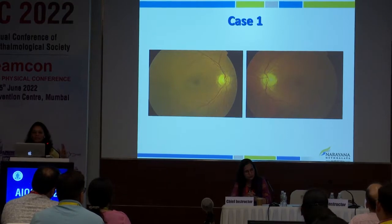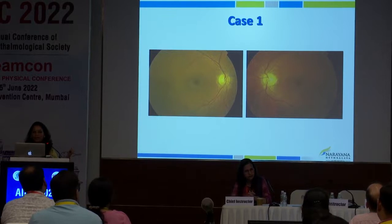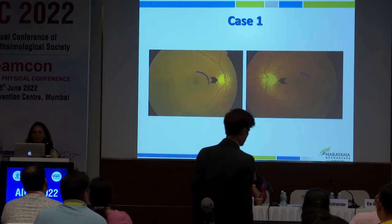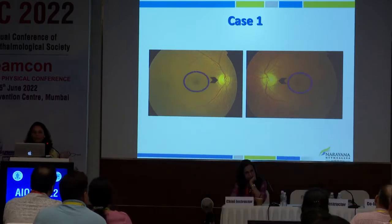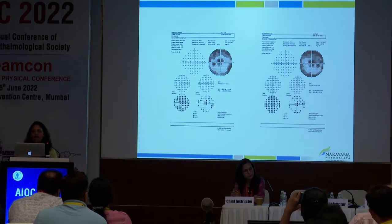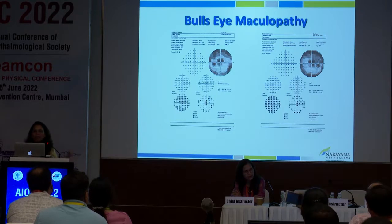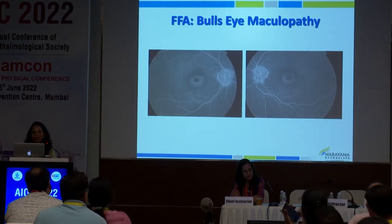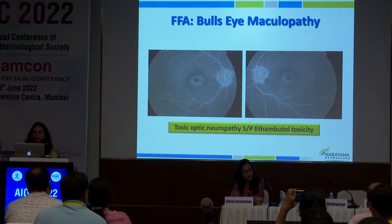Returning to case one — a patient with hypertension on AKT — the visual field shows a temporal defect. Looking beyond the disc to the macula reveals a classical bullseye maculopathy. Bicentral scotomas were found on visual field testing that respect neither the vertical nor horizontal meridian, pointing anteriorly. FFA confirmed a toxic optic neuropathy — specifically ethambutol toxicity from the AKT regimen.